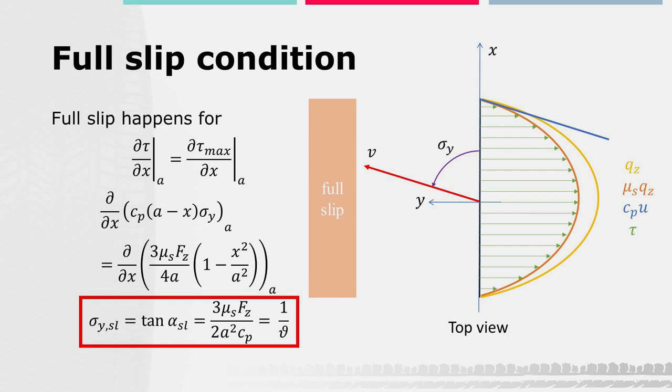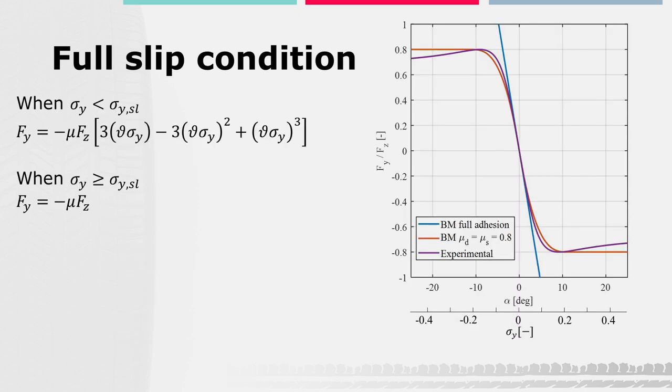Developing the equation, the full slip condition occurs when the slip becomes equal to 1 over θ. The introduction of the Coulomb friction model allows to correctly reproduce the saturation of the lateral force for large slip values.